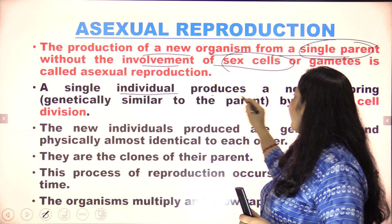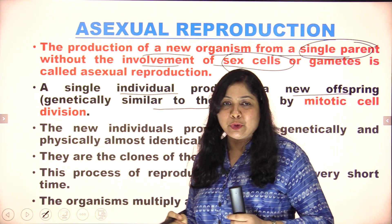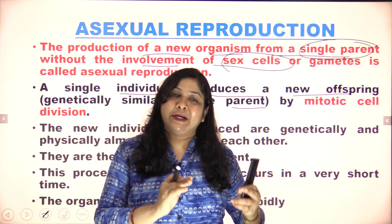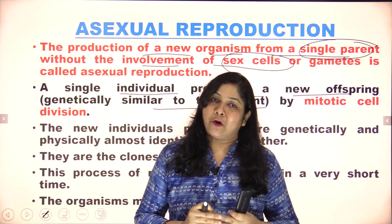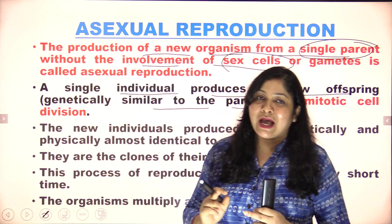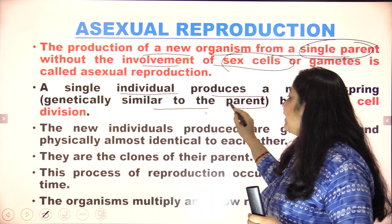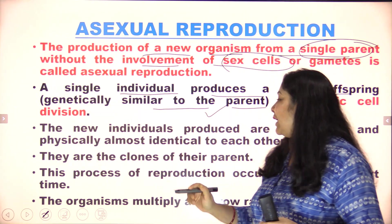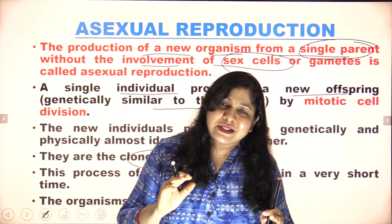A single individual produces a new offspring. A single parent is required, and the offspring are genetically similar to their parents. This is because the parent transmits their characteristics to the offspring. As here only a single parent is involved, the offspring will be almost identical — sometimes we consider them as clones of the parents. The chances of variation are very low.